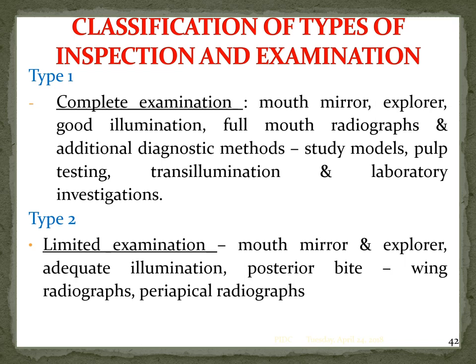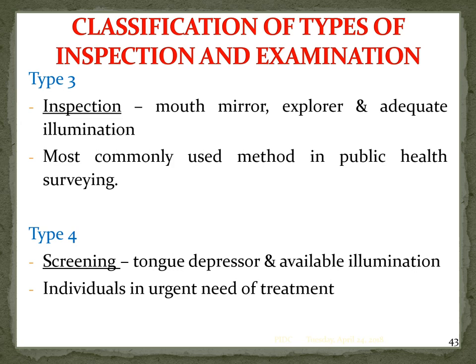Classification of examination: Type 1 is complete examination using mouth mirror, explorer, good illumination, full mouth radiographs, additional diagnostic methods, study models, pulp testing, transillumination, and laboratory investigation. Type 2 is limited examination using only mouth mirror, explorer, adequate illumination, posterior bitewing radiograph, and periapical radiograph. Type 3 is just inspection using only mouth mirror, explorer, and illumination — most commonly used in public health surveying.